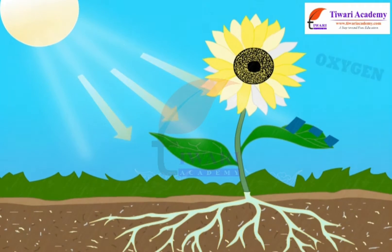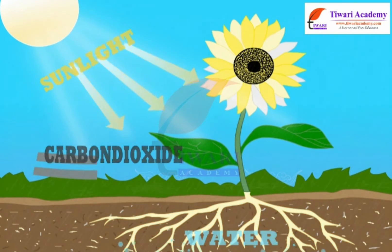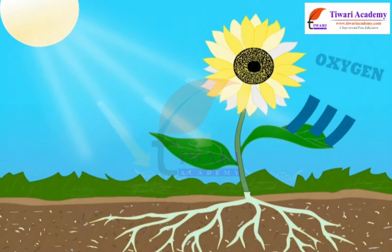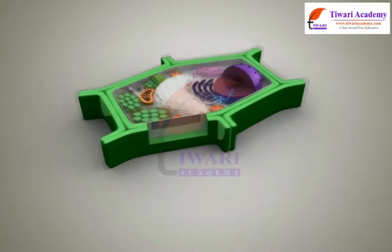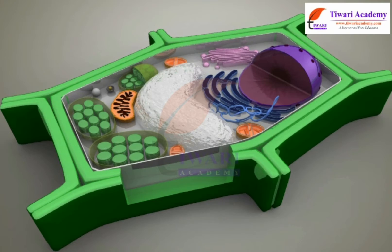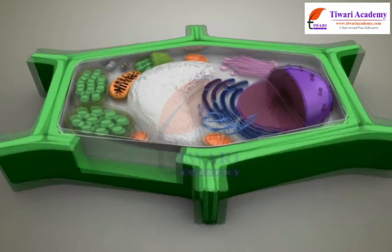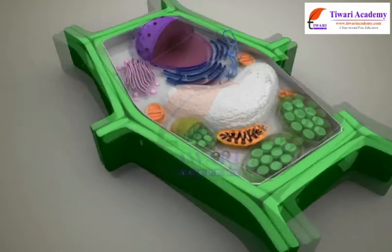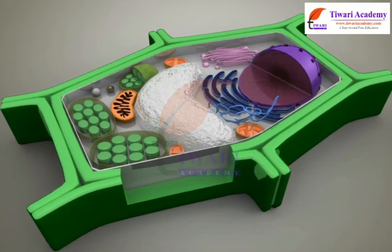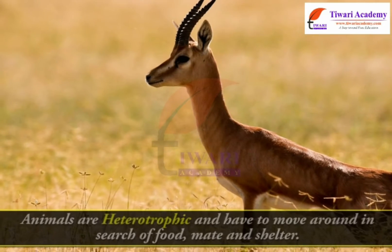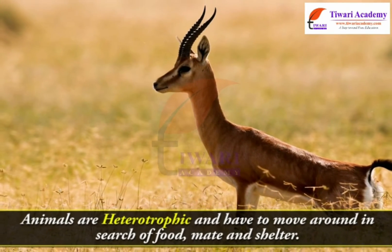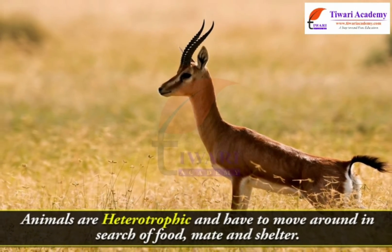Plants are autotrophic — they can make their own food in the presence of sunlight, carbon dioxide, and water with the help of chloroplasts. They are fixed at one place, so the tissues in plants are mainly of types that give them strength. Some of them are also dead tissue, which provides mechanical strength. Animals are heterotrophic and have to move around in search of food, water, and shelter.